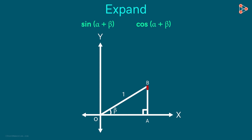This is the opposite side and this is the adjacent side. The opposite side is of length sine beta and the adjacent side is of length cos beta.